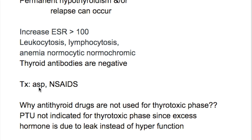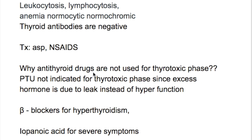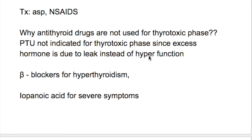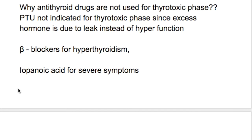Treatment is aspirin and NSAIDs. Antithyroid drugs like propylthiouracil are not indicated for the thyrotoxic phase, since the excess hormone is due to leakage rather than hyperfunction. The drug used for the thyrotoxic phase is a beta blocker, and for severe symptoms, iopanoic acid.